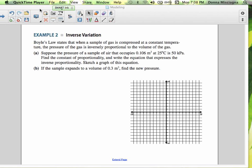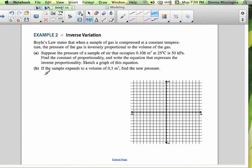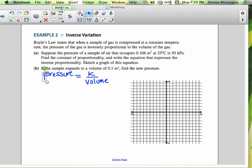Inverse variation, Boyle's Law states that when a sample of gas is compressed at a constant temperature, the pressure of the gas is inversely proportional to the volume of the gas. Alright, so let's think about what that's telling us. It's telling us that the pressure of the gas is inversely proportional to the volume of the gas. So in other words, the volume is going to go in the denominator because they are inversely proportional.